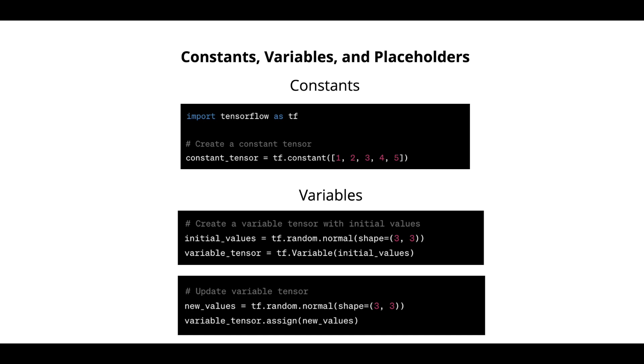Constants. Constants are tensors whose values cannot be changed once defined. They are typically used to represent fixed values or hyperparameters in a model. How do you create a constant? Import tensorflow as tf and then to create a constant you give a name and say tf.constant and give the value inside it. It can't be changed.